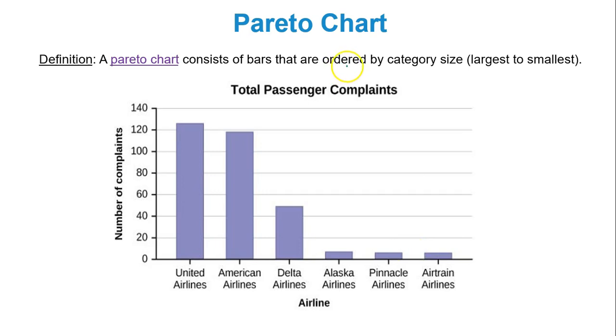A Pareto chart just consists of bars that are ordered by category size. So don't be scared about the word Pareto. Literally the categories or the bars are put from largest to smallest. So United comes first, American, Delta, Alaska, Pinnacle, and Airtran. So all it is is a bar graph where the bars are in greatest to least order.